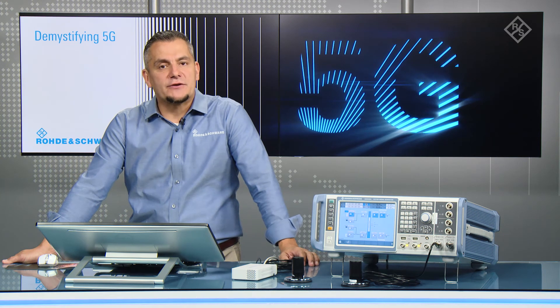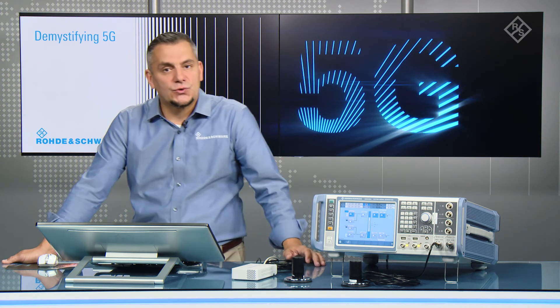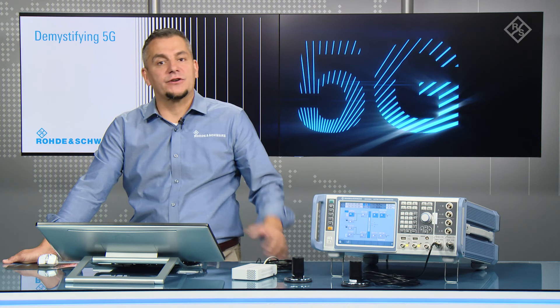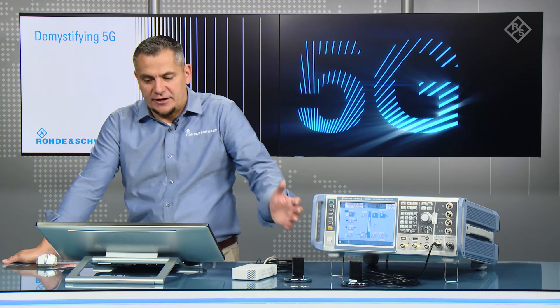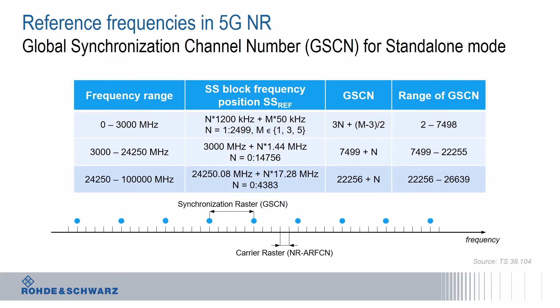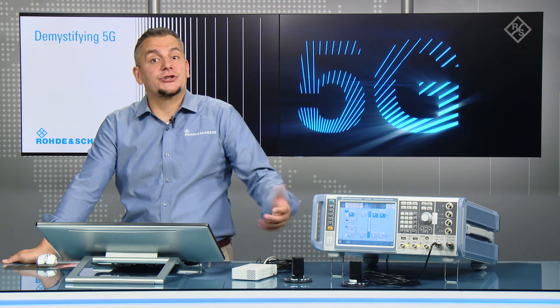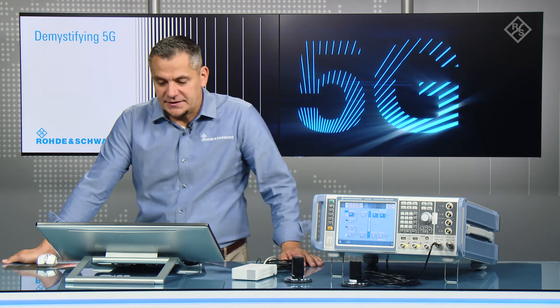If the mobile had to follow the full frequency raster in 5G NR, it would take a very long time to sweep all frequencies. For a full standalone-only 5G deployment — where there is no LTE anchor — the standard has defined the Global Synchronization Channel Number (GSCN) for different frequency ranges. Rather than using the fine carrier raster granularity, the GSCN provides a much wider granularity, reducing sweep time. However, this is relevant for standalone mode and not for the initial 5G NR non-standalone deployments coming in the near term.